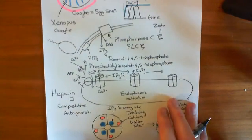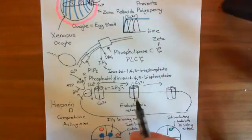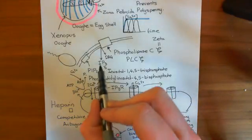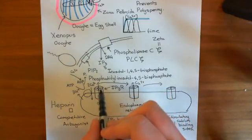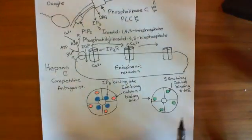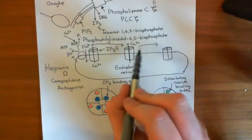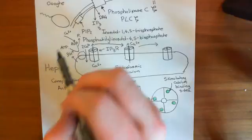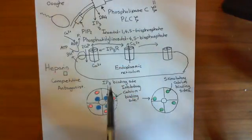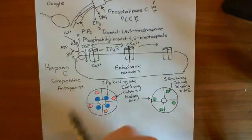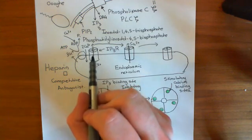If we administer heparin to the Xenopus oocyte, we would expect it to block the calcium waves. Basically, it's going to bind to all of the IP3 receptors and block IP3 from being able to bind. If IP3 cannot bind, then you cannot prime these IP3 receptors — i.e., you cannot take away the inhibitory calcium binding site and expose the stimulatory calcium binding site. So the inhibitory calcium binding site will remain exposed on all of these IP3 receptors.